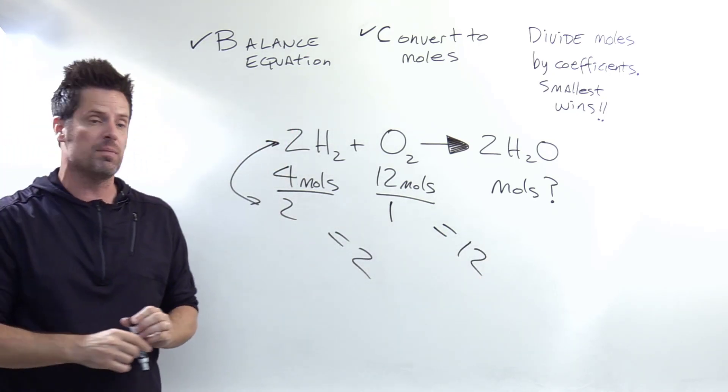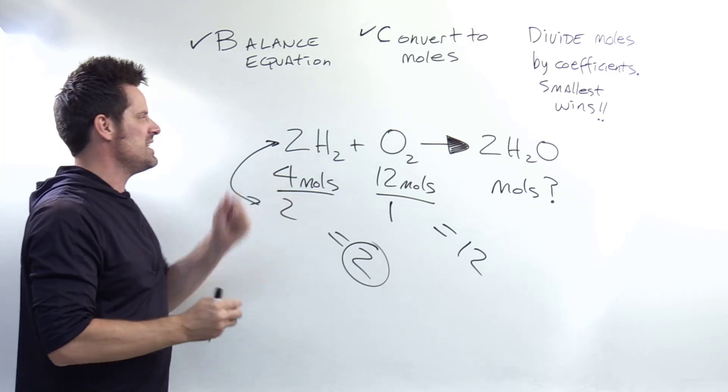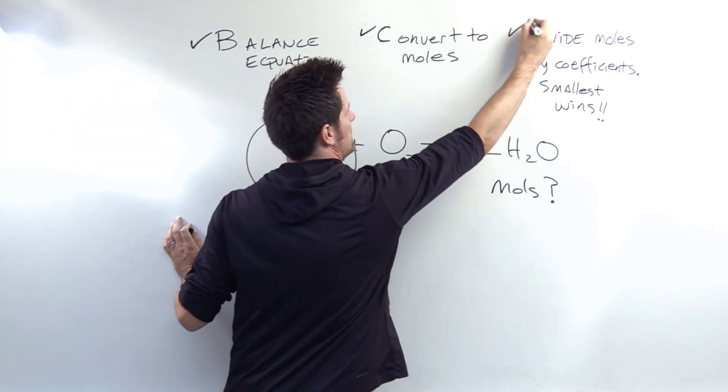Which of these two answers is smaller? Yeah, it's the two, which means that the limiting reactant, the one that will run out first, is the H2. And I'm done with step D.